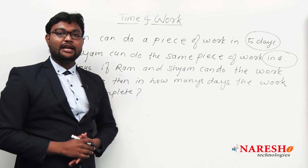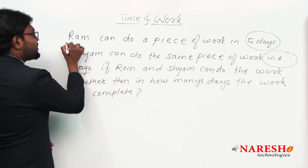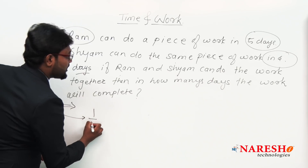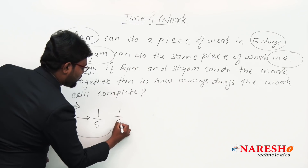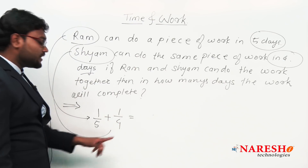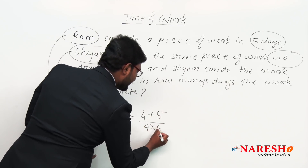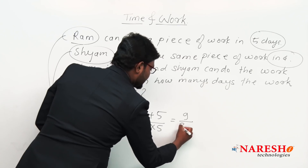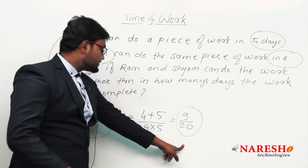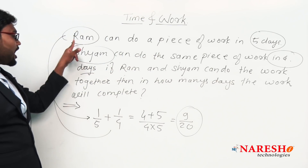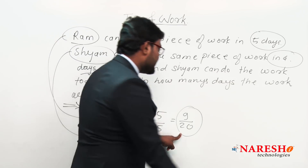To solve this, we first calculate their individual one-day works. One-day work of Ram is one by five. One-day work of Sham is one by four. Adding their one-day works together: one by five plus one by four gives four plus five divided by four times five, which equals nine by twenty.